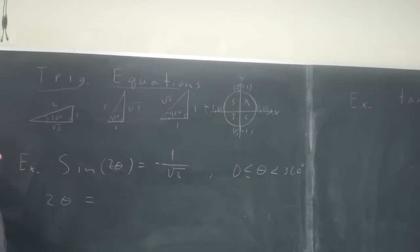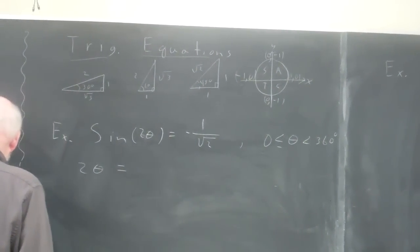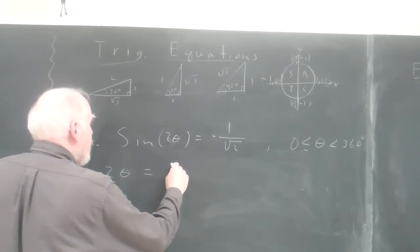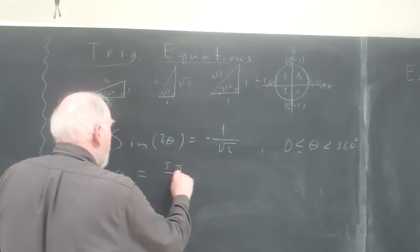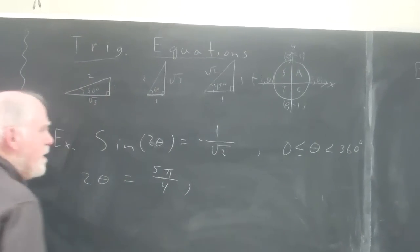So the 45 degree angle in the third quadrant is 5 pi over 4. Notice I'm using radian measure. It's a little easier to do these with radian measure.